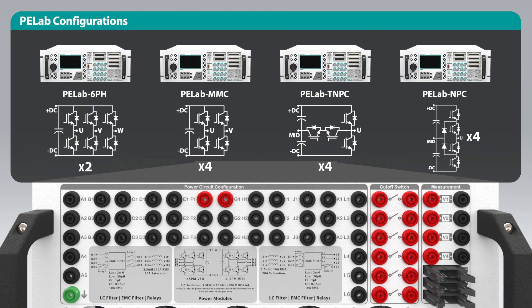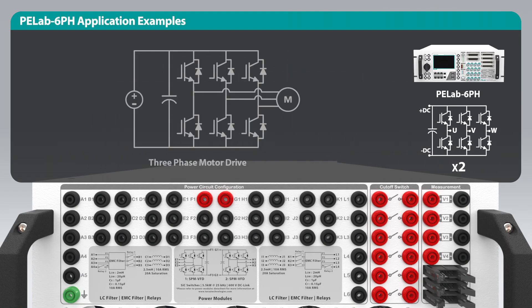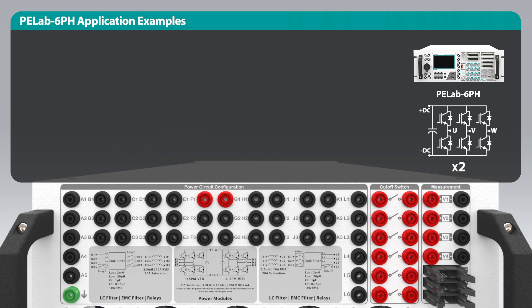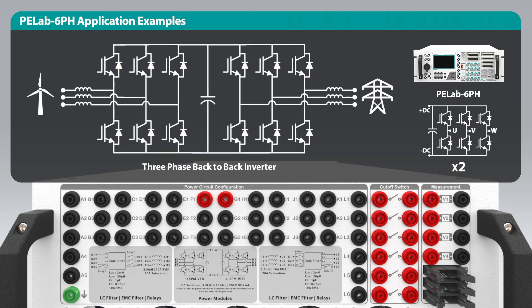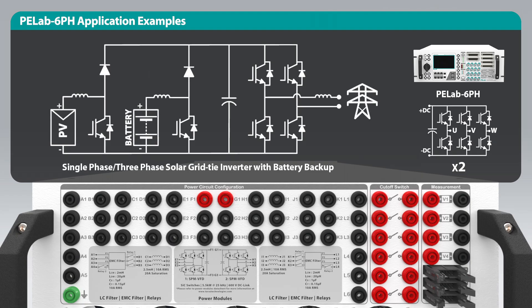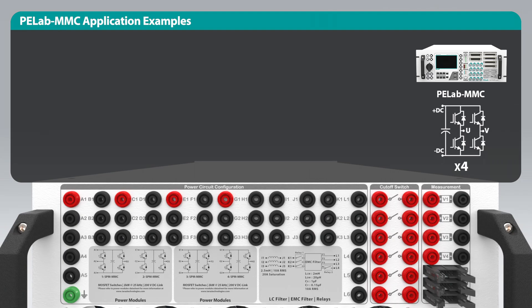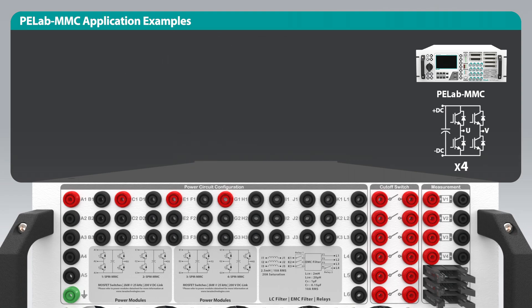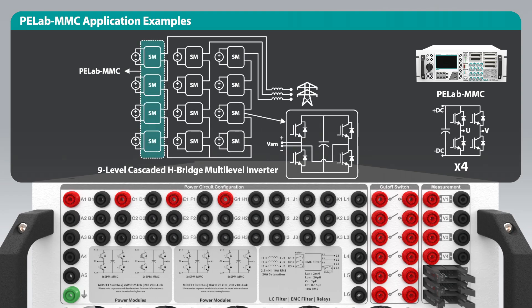There is a range of applications enabled by each PE Lab configuration. The six-phase inverter configuration can be used for motor drive applications, solar grid-tie and off-grid inverters, three-phase back-to-back inverters, and solar hybrid inverters with battery backup. The MMC configuration can be used for all mentioned applications, as well as bi-directional EV chargers with dual active bridge or LLC converters, modular multilevel converters, and cascaded H-bridge multilevel inverters.